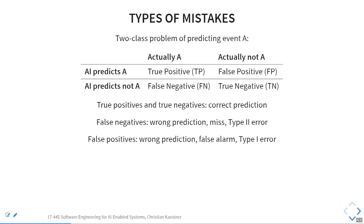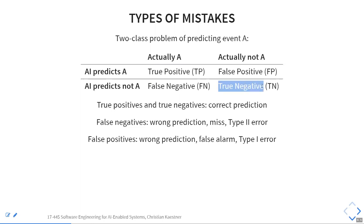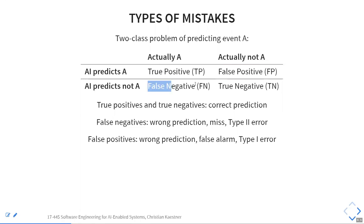In binary classification tasks, a common approach is to distinguish false positives from false negatives. In cancer prediction: if you correctly predict cancer, that's a true positive. If you correctly predict no cancer, that's a true negative. If you predict cancer but the patient doesn't have it, that's a false positive — potentially scaring the patient or creating extra work for the doctor. A false negative is predicting no cancer when the patient actually has it, which could leave cancer undetected.